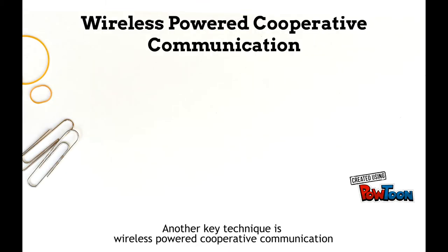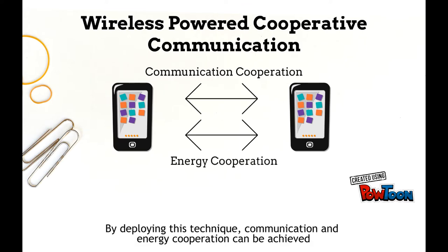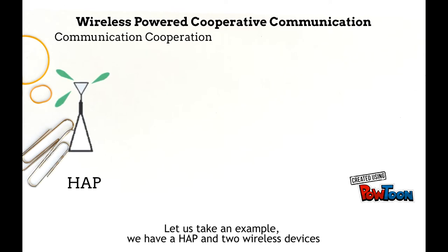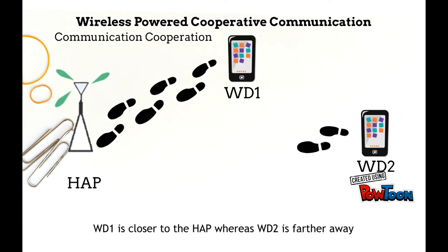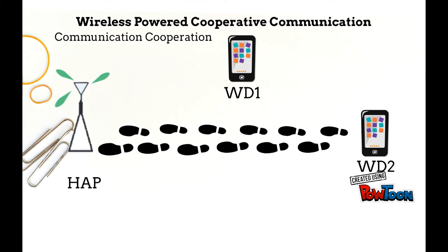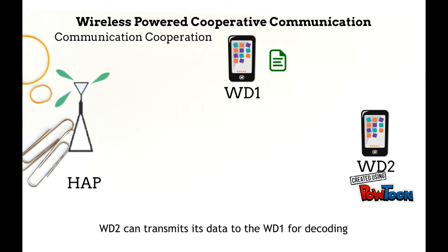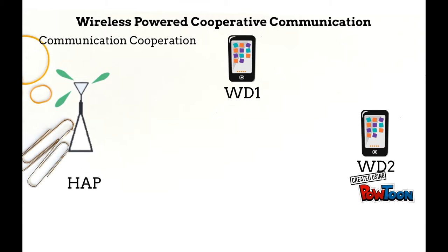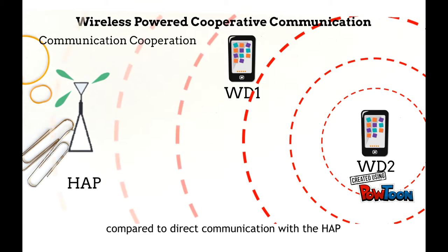Another key technique is wireless power cooperative communication. By deploying this technique, communication and energy cooperation can be achieved. For example, consider a HAP and two wireless devices where WD1 is closer to the HAP and WD2 is further away. First, the HAP performs wireless power transfer (WPT). WD2 can then transmit its data to WD1 for decoding, and the messages are decoded together and sent to the HAP. This way, WD2 benefits from a shorter communication range compared to direct communication with the HAP.